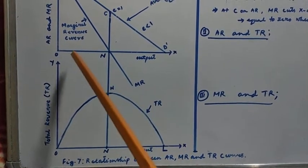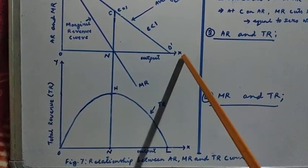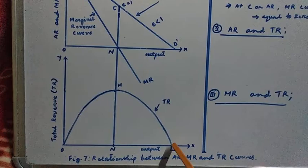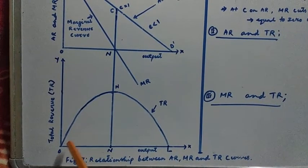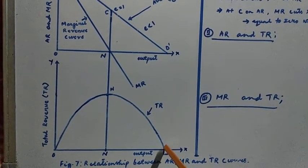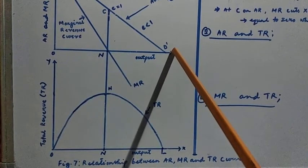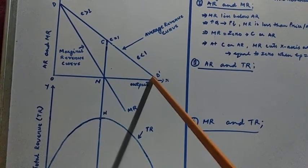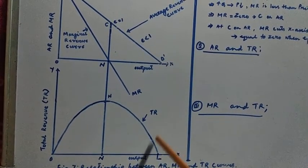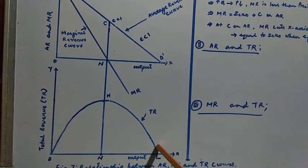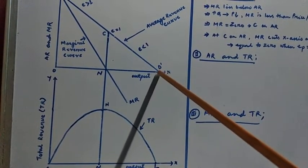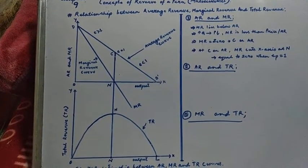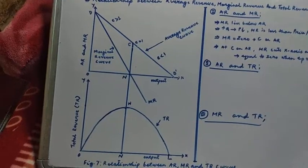At the OD' level of output, the total revenue is zero. This is because at point OD', the average revenue or price is also zero. At OD' level of output, total revenue is zero because average revenue or price is also zero at OD'. That is basically the relationship between the average revenue and total revenue.